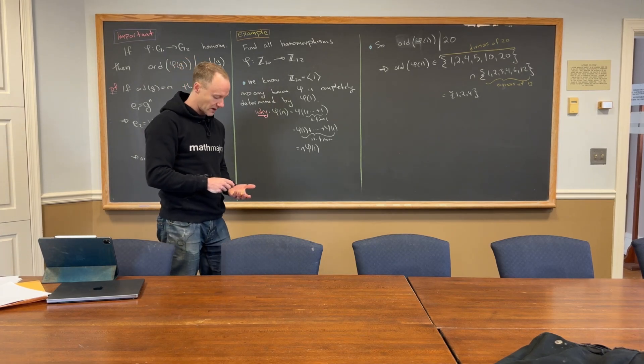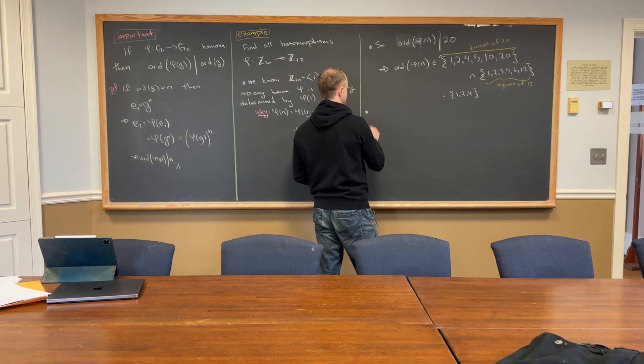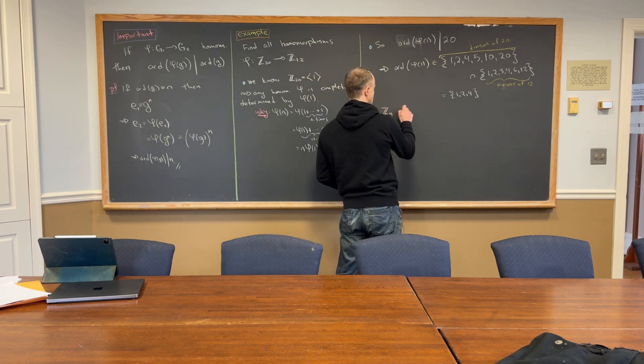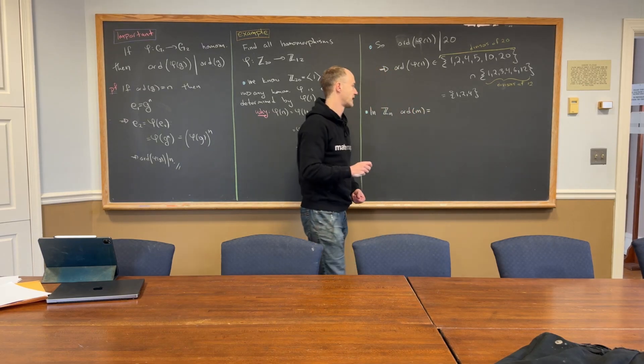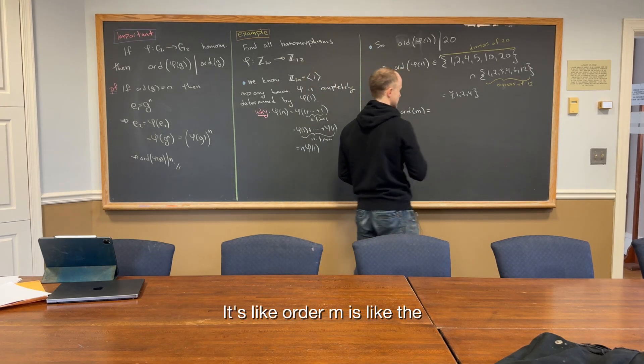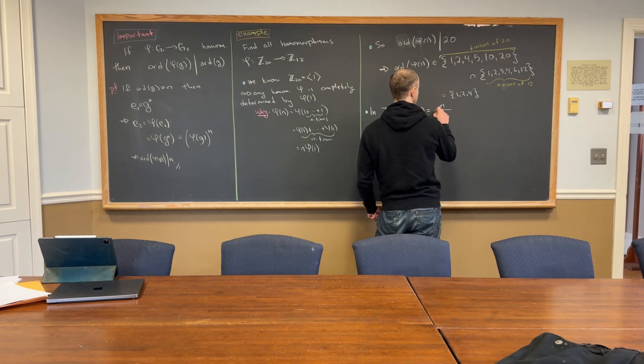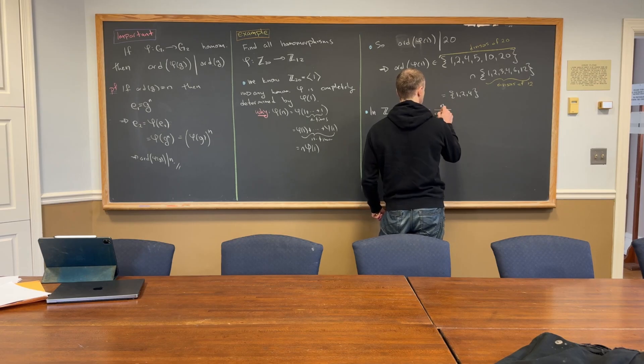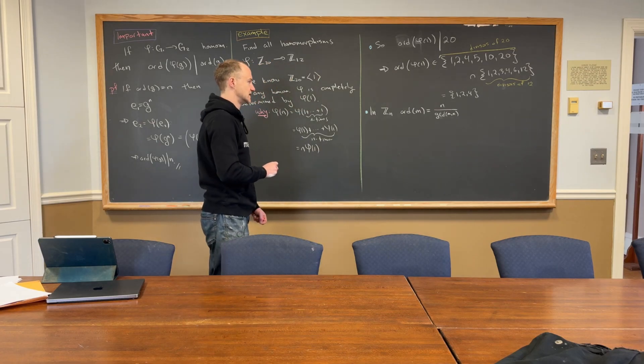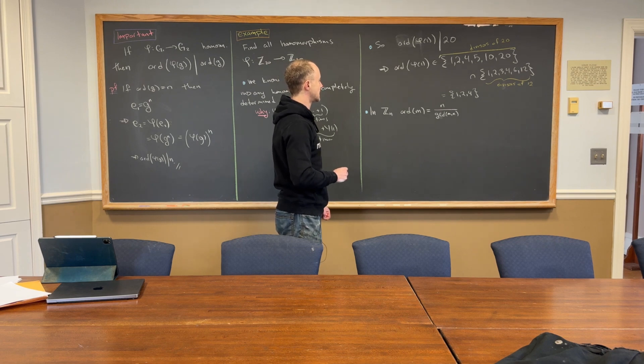But, now, we'll have to use this next trick. I mean, trick. It's like a fact that we proved before. And, that is, in Zn, the order of M is equal to, does anybody remember this? Um, like, order M is, like, the order of the GCD of M and N? Yeah. It's N divided by the GCD of M and N.